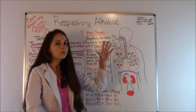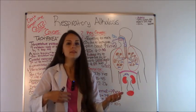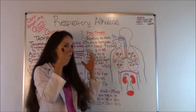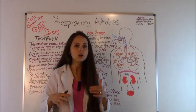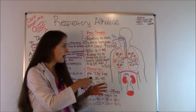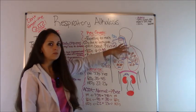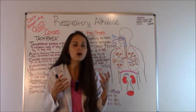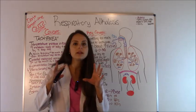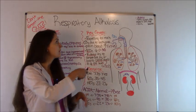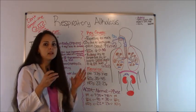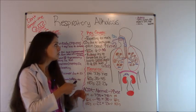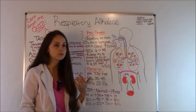A normal adult breathes 12 to 20 breaths per minute, and that is a good amount of breathing to get rid of carbon dioxide. Anytime something interferes with how much you're breathing, it's going to affect how much carbon dioxide you are getting rid of. The key concept to remember here is that in respiratory alkalosis you are expelling way too much carbon dioxide.